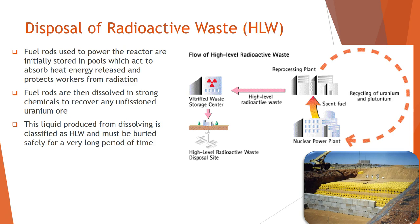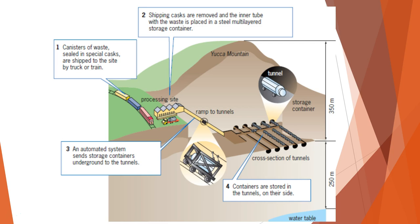For high level waste, the fuel rods are stored in pools which absorb heat energy as they cool down and protect workers from radiation. The fuel rods are then dissolved in chemicals to recover any uranium or plutonium that can be recycled. The liquid from this process is vitrified into glass, placed into barrels, and buried deep underground in storage facilities — in tunnels in areas with limited to no seismic activity.